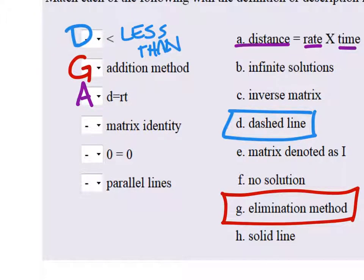Matrix identity. That is a matrix denoted as I. I for identity. E.